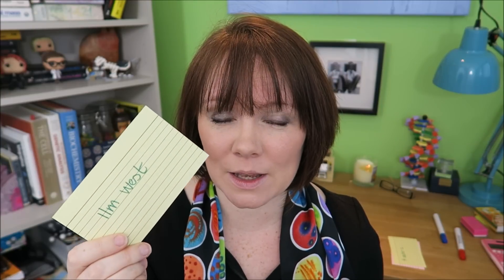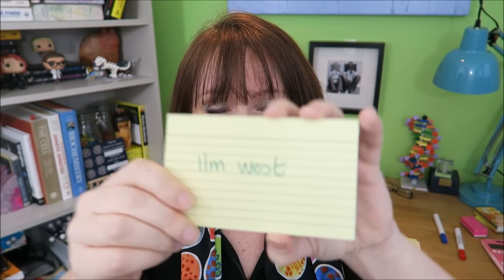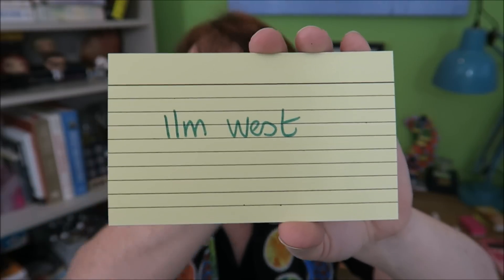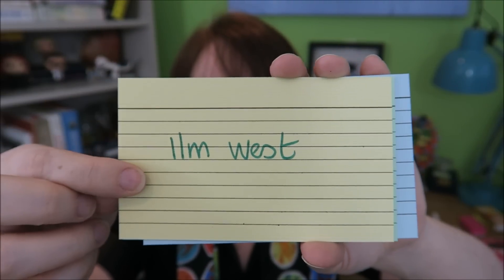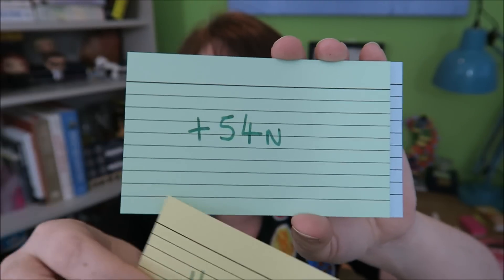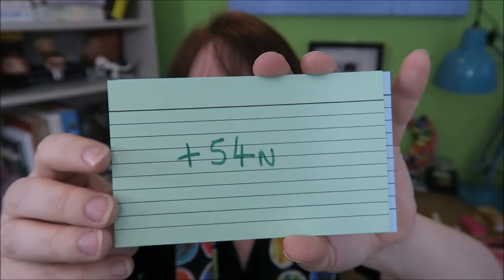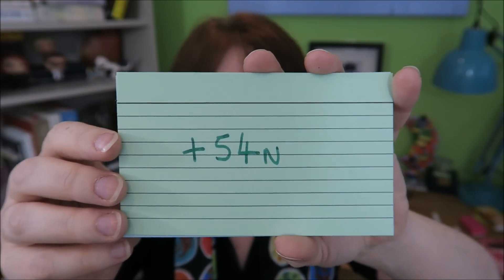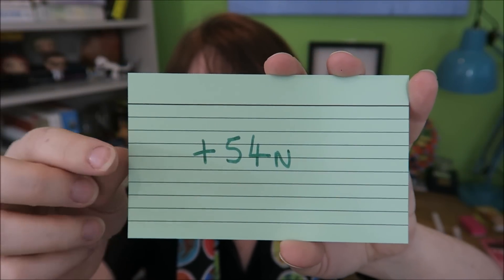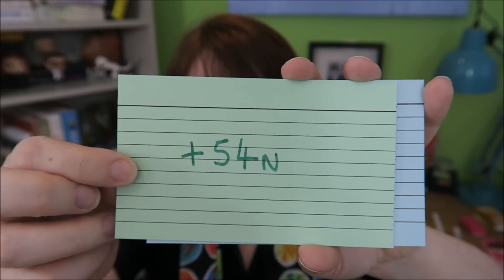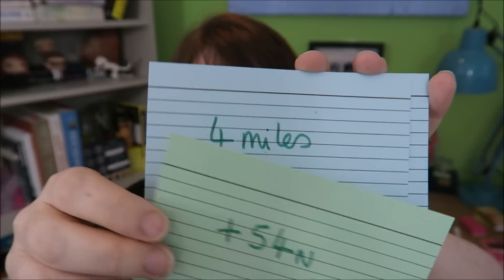Here is my little quiz - you need to be able to get all of these right. Are they vector or are they scalar? 11 meters west - this is vector because we have a number and we have a direction. Plus 54 newtons - this has a direction and is a force, so it is a vector.